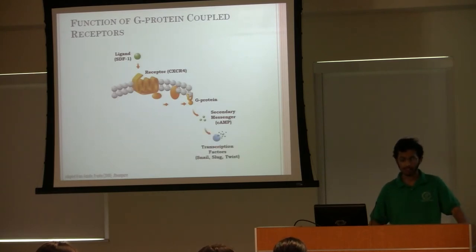The messengers, in turn, activate transcription factors inside the nucleus. These transcription factors, in our case, included snail, slug, and twist. And these transcription factors cause protein expression that can change the structure of the cell.